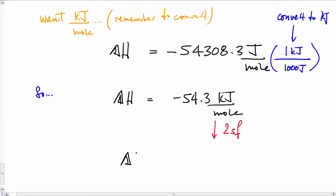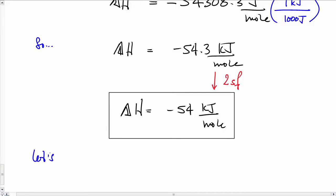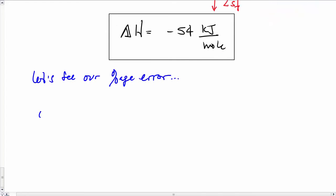However, be careful with significant digits. This calculation has just two significant digits in it from the temperature change. That's -54 kilojoule per mole. And there we have the enthalpy change for the reaction.